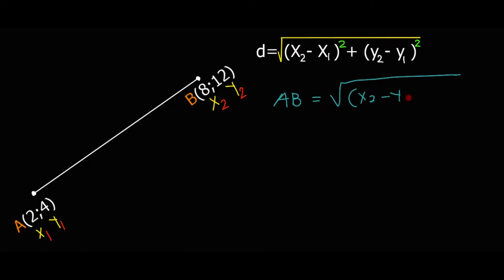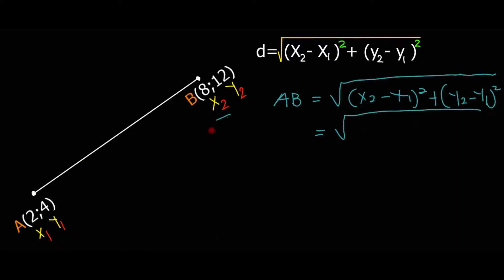The formula is: AB equals the square root of (x2 minus x1) all squared, plus (y2 minus y1) all squared. From here, we substitute: x2 is 8 and x1 is 2, so we have eight minus two, all squared. Plus — y2 is 12, so we have 12 minus four, all squared. We can simplify: eight minus two gives us six, so we have six squared.